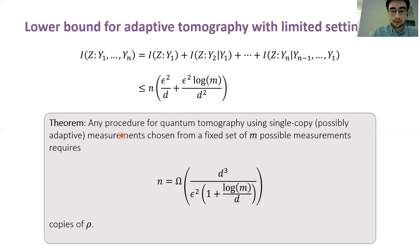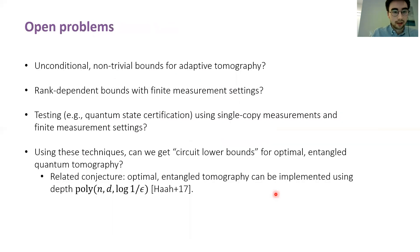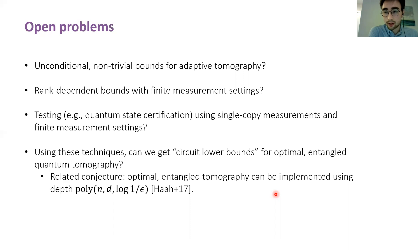That leads to our main theorem: roughly speaking, d-cubed measurements are required so long as there aren't too many measurement settings. Let me conclude with some open problems. First, is it possible to get unconditional non-trivial bounds for adaptive tomography? This is a question that was posed in the thesis of John Wright, for example.